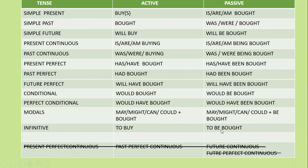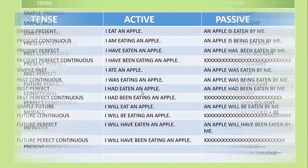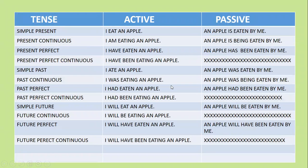Note that infinitive 'to buy' should be changed to 'to be bought'. You don't have passive forms for present perfect continuous, past perfect continuous, future perfect continuous, and future continuous. So barring those four tenses, you do have passive voice for all the other eight tenses out of twelve tenses.